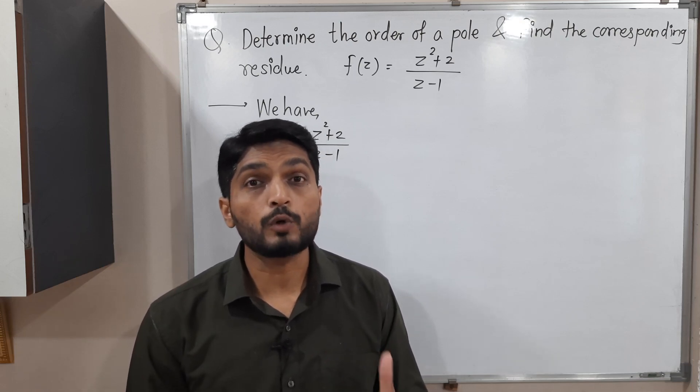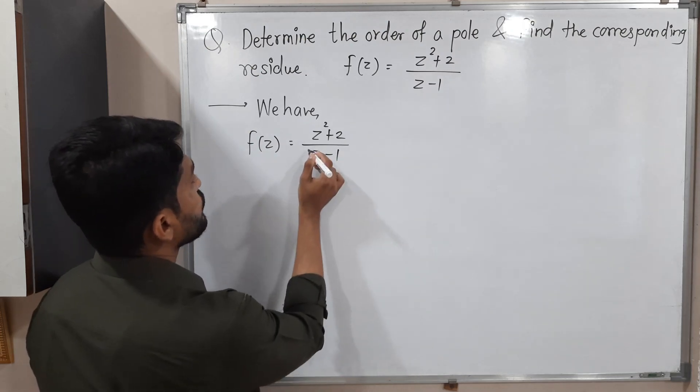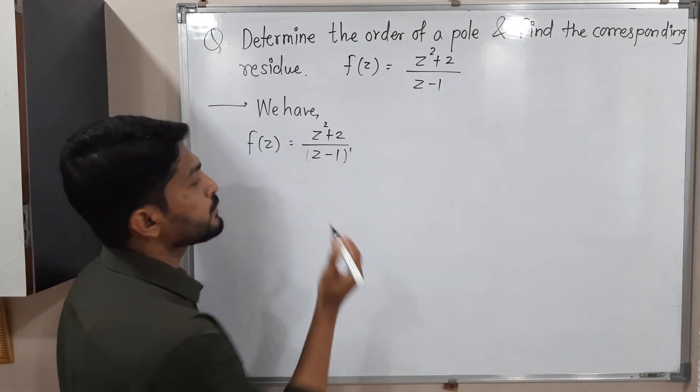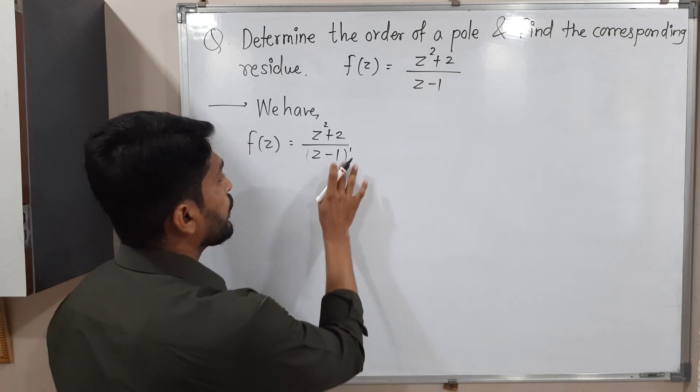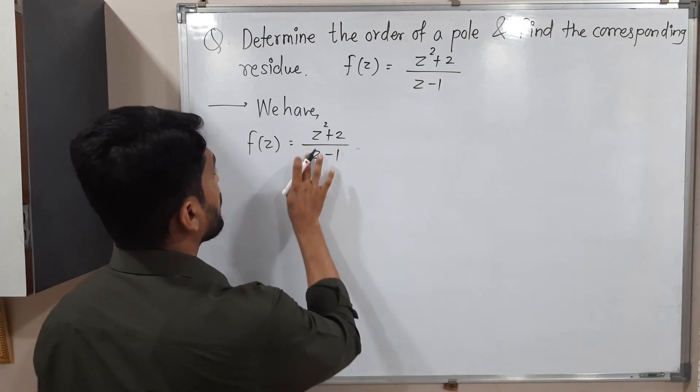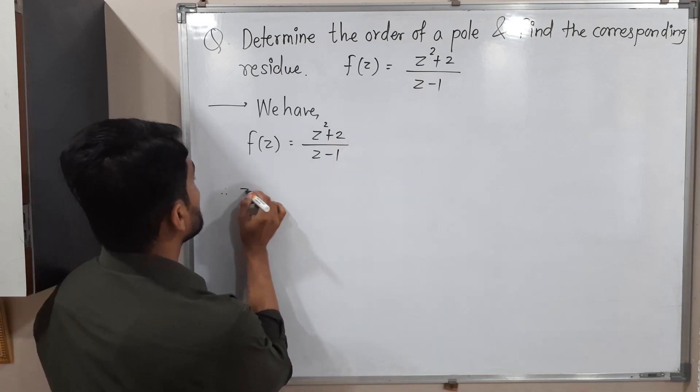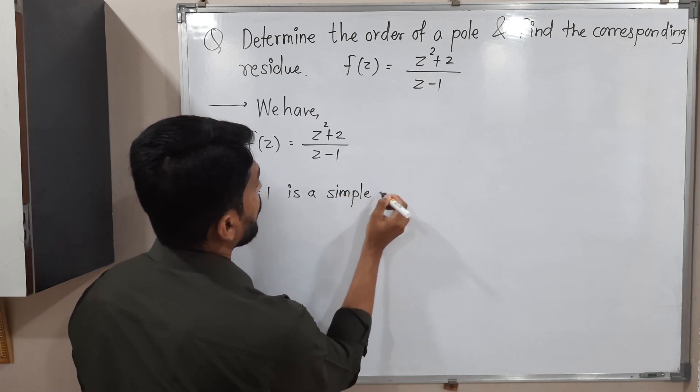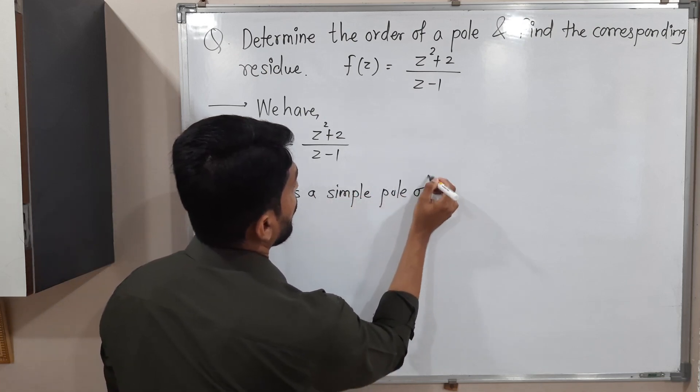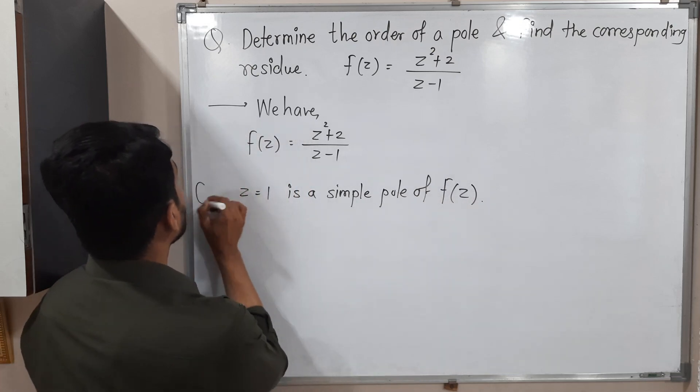After that, what is its order? Tell me what is power of that bracket? So power nothing is there. That means 1 is there. So z = 1 is a pole of order 1. We also call it as a simple pole, since it has order 1. Therefore, z = 1 is a simple pole of f(z).